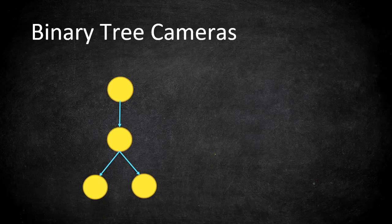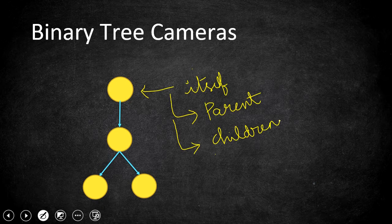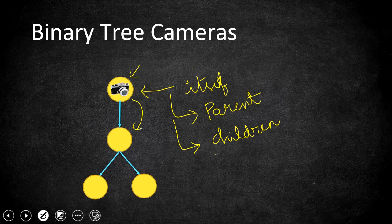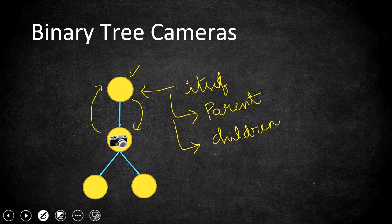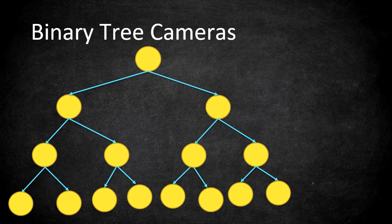Let's understand this problem with an example. Consider this binary tree — the rule says if we place a camera on a node, it will monitor itself, its parent, and its children. If we place a camera on the root, it covers itself and its children, but two more nodes remain uncovered. If we keep the camera on the second node, it covers its parent as well as its children. So placing one camera there is the minimum needed, and we return one as our output.